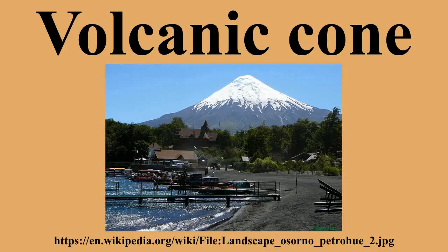Spatter cones are more circular and cone-shaped, while spatter ramparts are linear wall-like features. Spatter cones and spatter ramparts are typically formed by lava fountaining associated with mafic, highly fluid lavas, such as those erupted in the Hawaiian islands. As blobs of molten lava spatter are erupted into the air by a lava fountain, they can lack the time needed to cool completely before hitting the ground. Consequently, the spatter are not fully solid, like taffy, as they land.